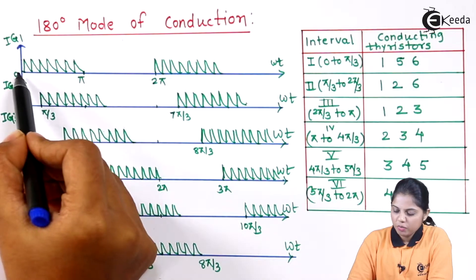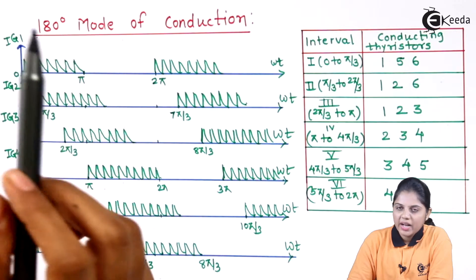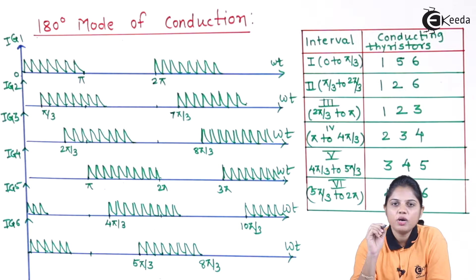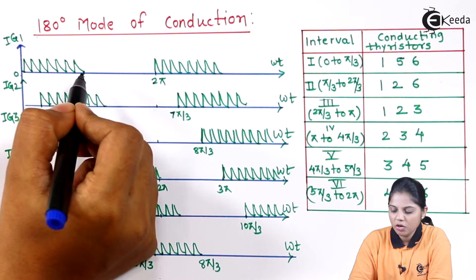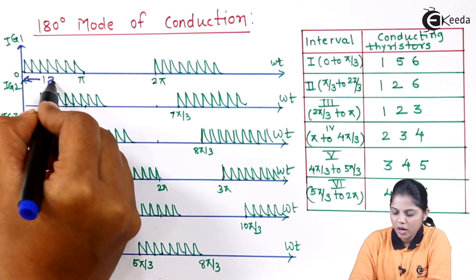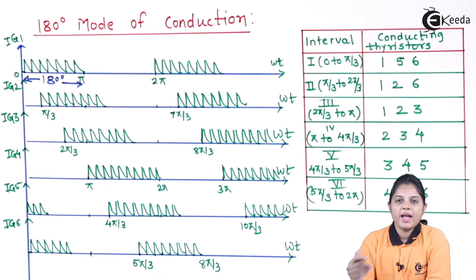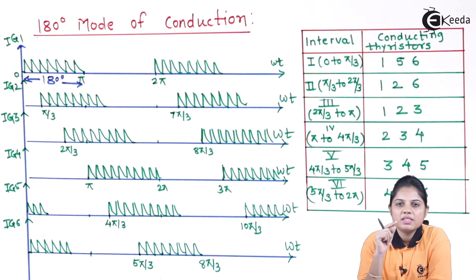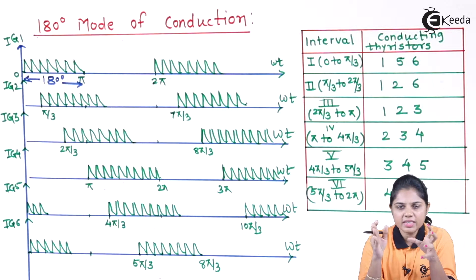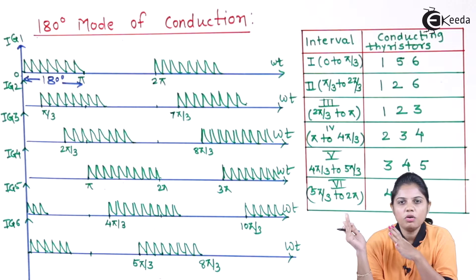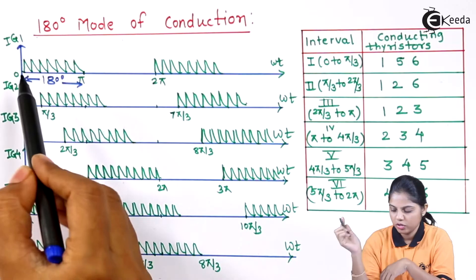Now let's see the waveform. This is from zero to pi. In 180-degree mode of conduction, the point where your SCR turns on, that SCR will remain on for a complete 180 degrees. That means if it starts at zero, it will remain on till pi — that is nothing but the complete 180-degree operation. Each SCR is turned on with a 60-degree delay. So if you are turning on SCR1 at 0, you are turning on SCR2 at pi/3 or 60 degrees, and SCR3 at 2pi/3. You are delaying every turn-on of an SCR by 60 degrees.